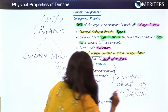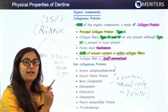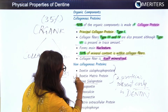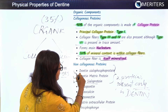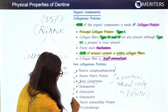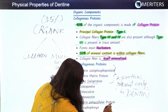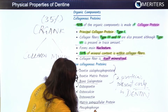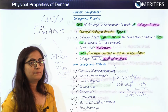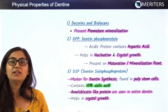The dentine-specific proteins include: dentine sialophosphoprotein (DSPP), dentine matrix protein (DMP), dentine sialoprotein, osteopontin, osteocalcin, osteonectin, matrix extracellular protein, and phosphorin. These are the main components of the non-collagenous protein fraction.